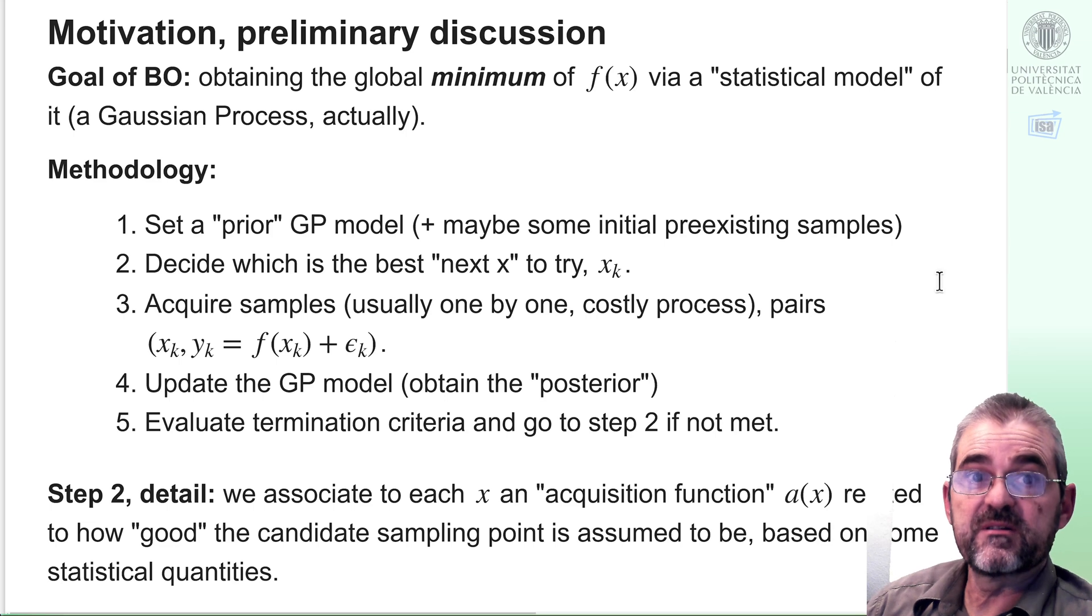The second step needs to translate how promising a candidate point is into an acquisition function so that the best value of that acquisition function is the best guess on where we should sample.